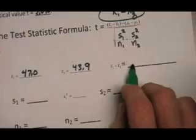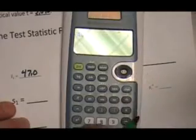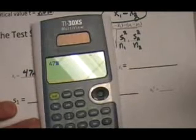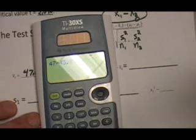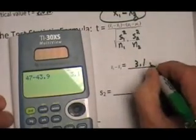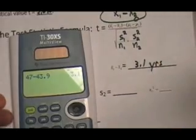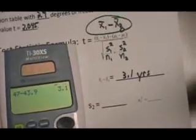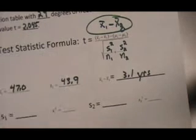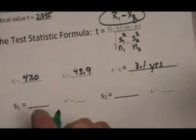And so the difference of these two, 47 minus 43.9, and that is 3.1. And it's in years, by the way, in case you're wanting, it's still years. So we're saying the difference between the two sample groups was 3.1 years. That's all we're saying.